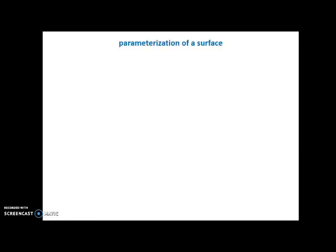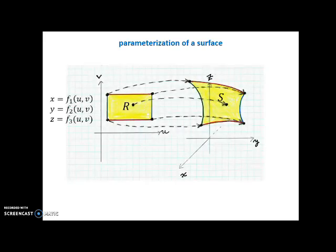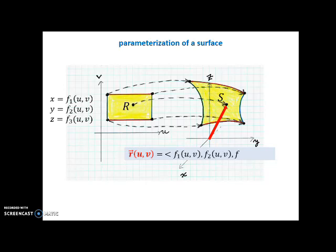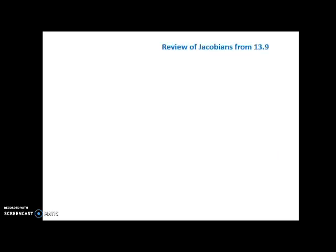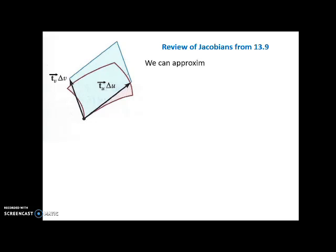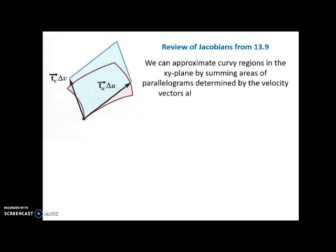So how do we parameterize the surface? We need two variables, u and v, and we need to create functions for each of the coordinates x, y, and z in terms of u and v. Here's a vector in standard position: r(u,v) equals the three components for x, y, and z in terms of u and v. Before we completely do the surface area integral, let's quickly review the Jacobians from Section 13.9, because this is going to be a similar type of thing. In 13.9 we dealt with curvy flat areas on the xy-plane, and we needed to rewrite them in terms of easier-to-integrate-over regions in the uv-plane.